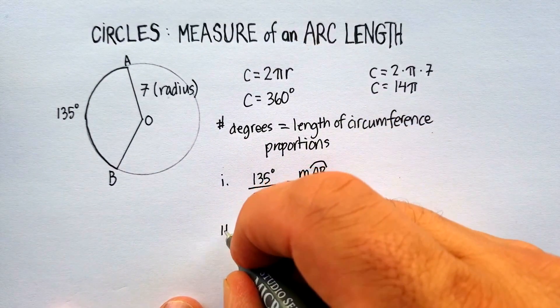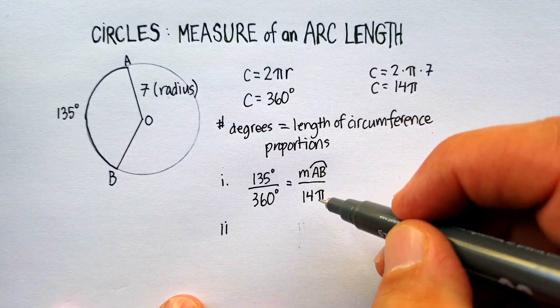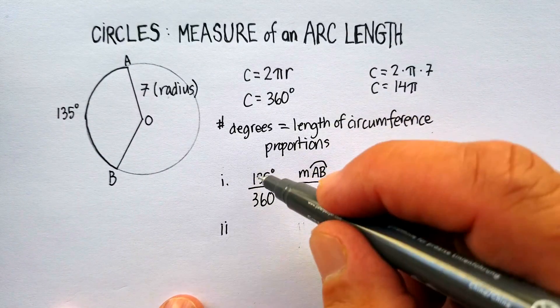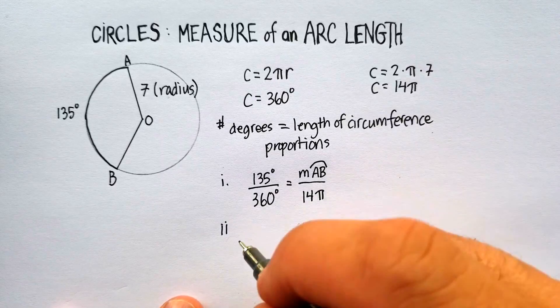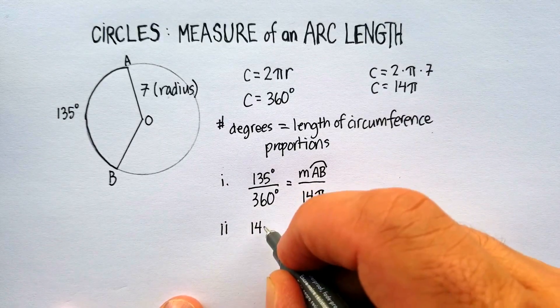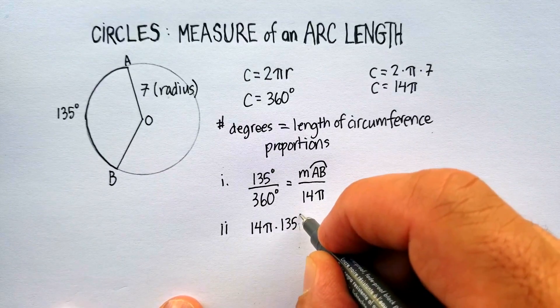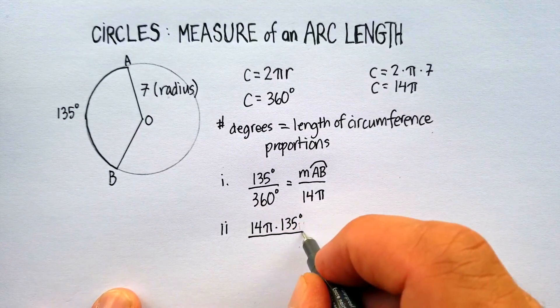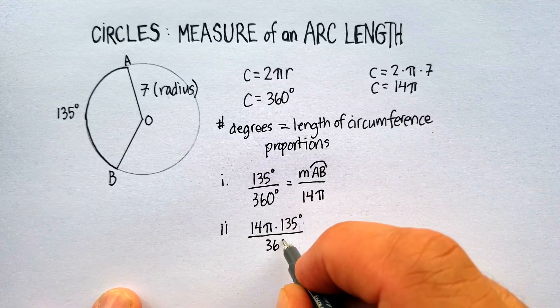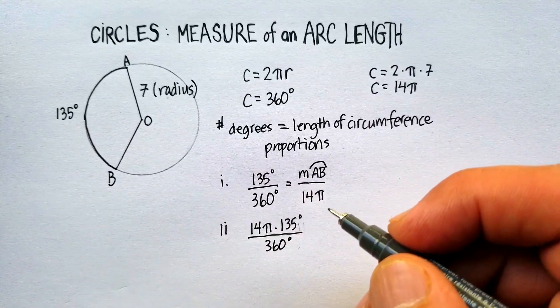All right, let's go ahead and multiply. We know that we can do cross products. We can just multiply this side by 14 pi, divided by 360, and we'll come up with the measure. So we'll say 14 pi times 135 degrees, divided by 360 degrees. Degrees will cancel in both.